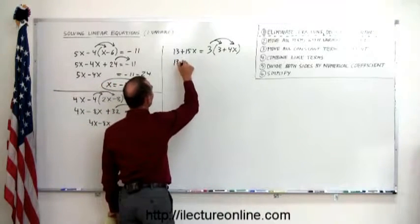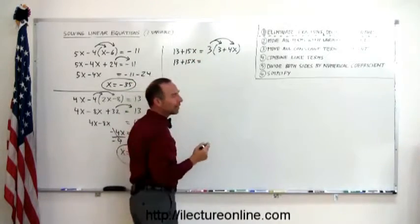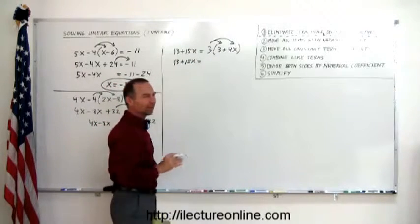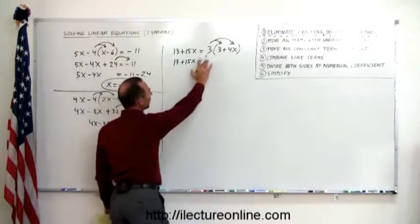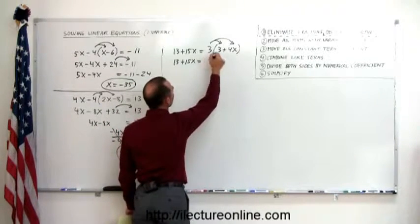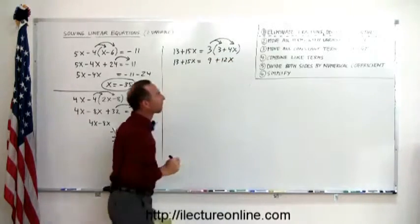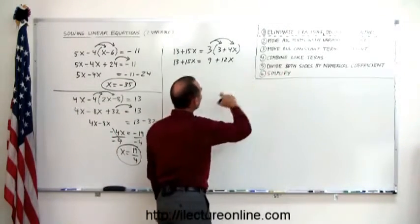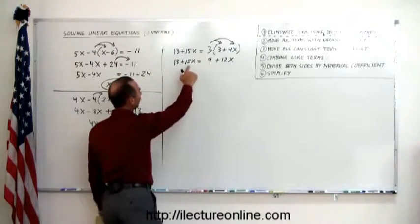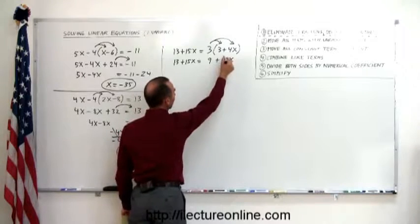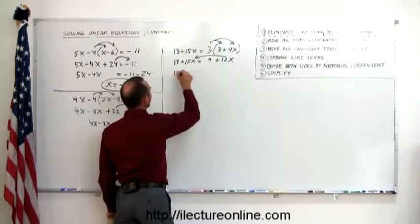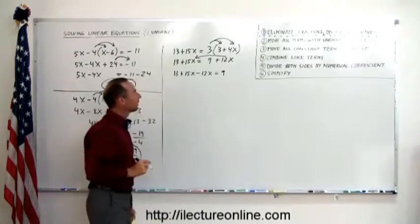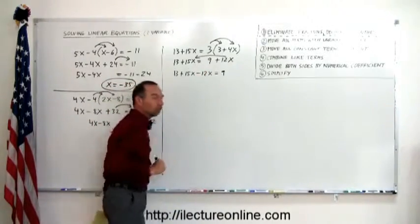The left side doesn't change, 13 plus 15x. And one of the great things about having this systematic approach is that you leave everything else alone as you do one step at a time. Just makes it a lot easier to work with. So we don't do anything on the left side. And here we multiply 3 times 3, which is 9, and 3 times 4x is 12x. Now we have gotten rid of our parentheses. We move on to the second step. Move all the terms with the variable to the left. I have one there, I must move that over here. So we have 13 plus 15x minus 12x equals 9. The 9 stays on the right side. Remember, when you cross the equal sign, the sign changes to a negative.